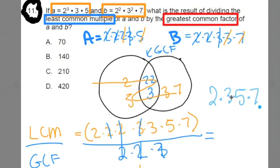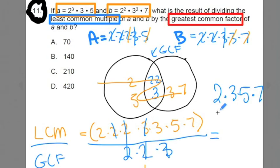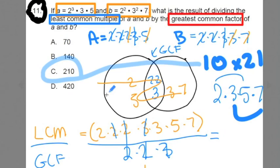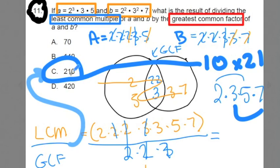Now what is 2 times 3 times 5 times 7? Well, what's 2 times 5? 2 times 5 is 10. And what's 3 times 7? 3 times 7 is 21. And what's 10 times 21? 10 times 21 is 210! And team, we've just found out the answer to this problem. When you divide the least common multiple by the greatest common factor of A and B, you get a quotient or an answer to that division problem of 210.